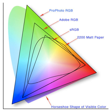A color model is an abstract mathematical model describing the way colors can be represented as tuples of numbers, e.g. triples in RGB or quadruples in CMYK. However, a color model with no associated mapping function to an absolute color space is a more or less arbitrary color system with no connection to any globally understood system of color interpretation.